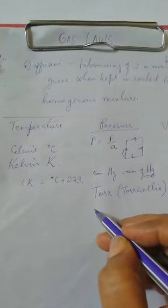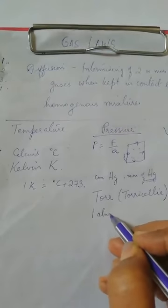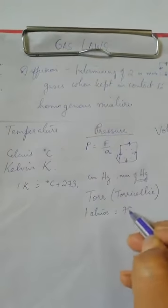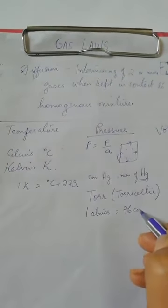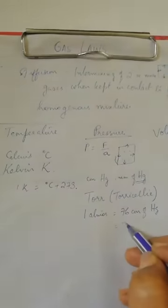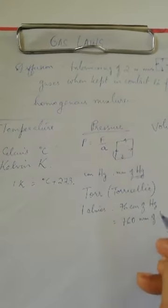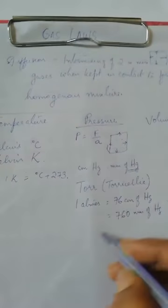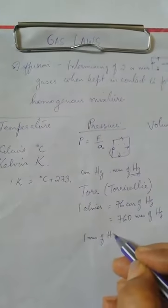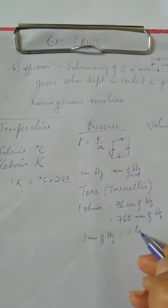Pressure is also measured in atmospheres. One atmosphere is the pressure equal to 76 cm of mercury, which is also equal to 760 mm of mercury. Remember, 1 mm of mercury is equal to 1 torr.